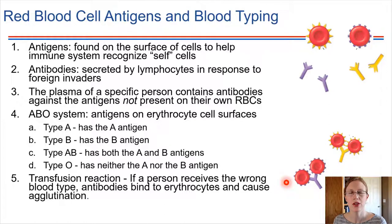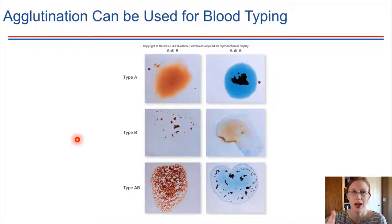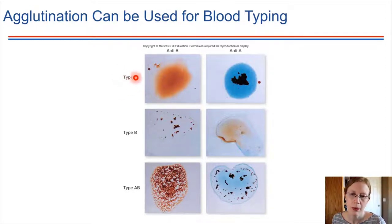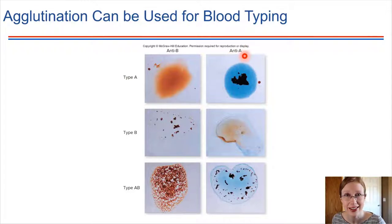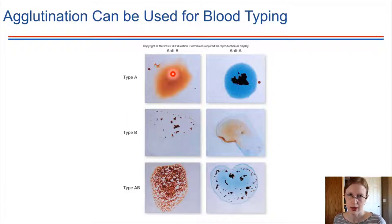With blood typing, how do we determine what blood type a person has? We can do a simple test. What this involves is taking a sample of blood and mixing in a little bit of antibody, and then looking to see if there's clumping. So if you take blood type A and mix it with antibodies against the A antigen, we're going to see clumping — agglutination takes place. If we mix blood type A with antibodies for type B, nothing's going to happen, because there's no B antigen present so there's no reaction with the antibodies.